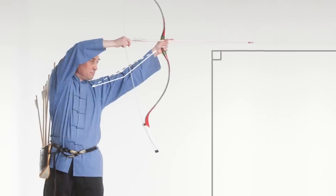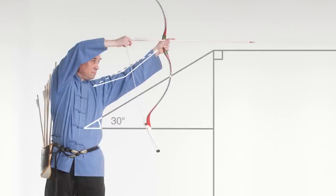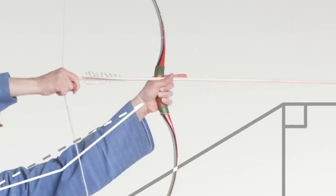Keeping the arrow level to the ground, raise the arms to a 30 degree angle with the ground. The bow arm index finger should point in the direction of the bullseye.